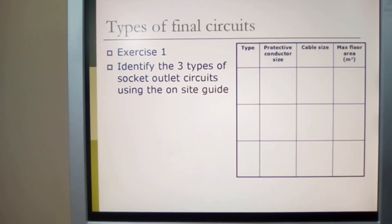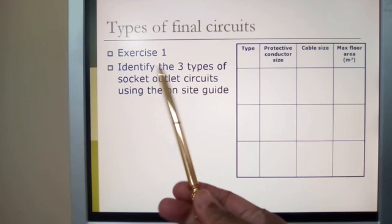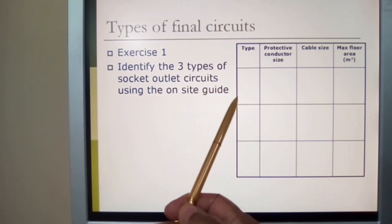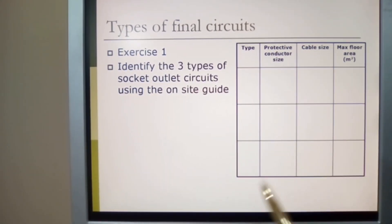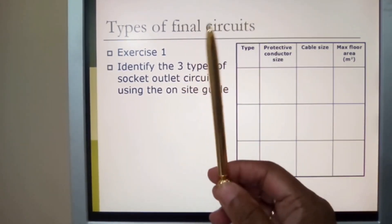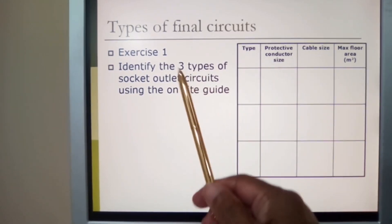Now, I've looked at types of final circuits. Exercise one: identify the three types of socket outlet circuits using the on-site guide. Use your on-site guide. You are all familiar with this by now. If not, look it up and find out what it is.